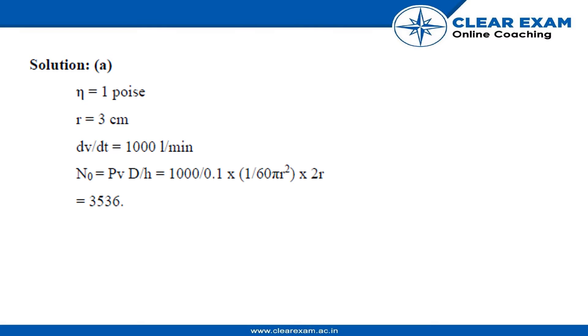We are given with these values: viscosity, radius, and the volume flow which is 1000 per minute. Now we need to find the Reynolds constant.